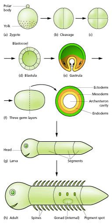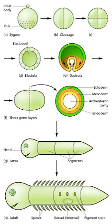Cell differentiation is the process whereby different functional cell types arise in development. For example, neurons, muscle fibers, and hepatocytes are well-known types of differentiated cell. Differentiated cells usually produce large amounts of a few proteins that are required for their specific function, and this gives them the characteristic appearance that enables them to be recognized under the light microscope.